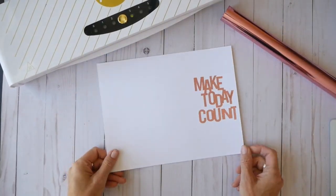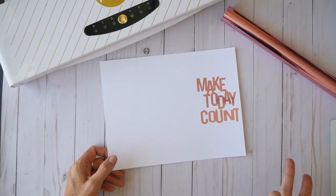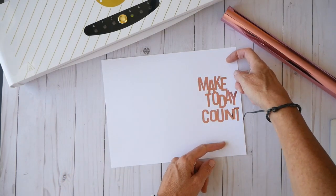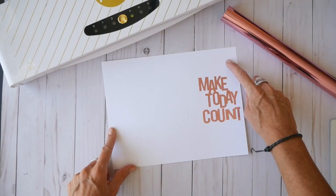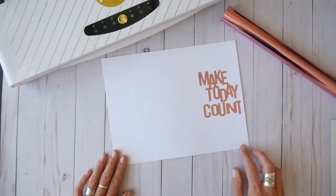So now I have my eight and a half by 11 card stock piece of paper. And the book that I'm going to craft is going to be about six inches high and four inches wide. So you're going to see how it's going to be folded that way, but I need to do some trimming.